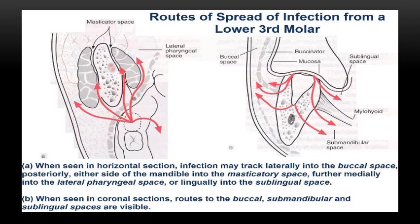On the right-hand side is a coronal section showing the different destinations where infection can go from the lower third molar: to the sublingual space if the pericoronal infection is above the mylohyoid muscle, or into the submandibular space from a pericoronal or periapical infection. On the buccal side, pericoronal infection may lead to buccal space or vestibular space infection. On the left-hand side, a horizontal axial section shows the posterior destinations: the submasseteric space, then medially through the pterygomandibular space, or even further medially past the medial pterygoid muscle into the lateral pharyngeal space.